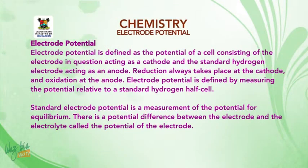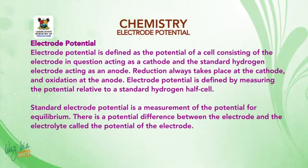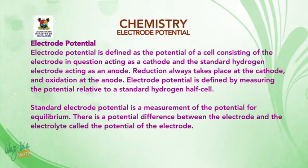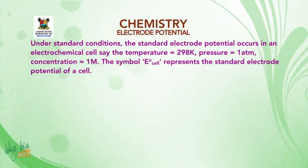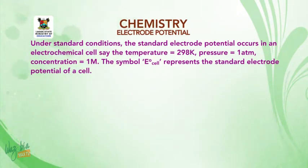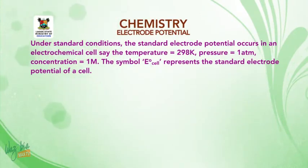Standard electropotential is a measurement of the potential for equilibrium. There is a potential difference between the electrode and the electrolyte called the potential of the electrode. Under standard conditions, the standard electropotential occurs in an electrochemical cell at a temperature of 298 Kelvin, pressure of 1 atmosphere, and concentration of 1 molar. The symbol E⁰ cell represents the standard electropotential of a cell.